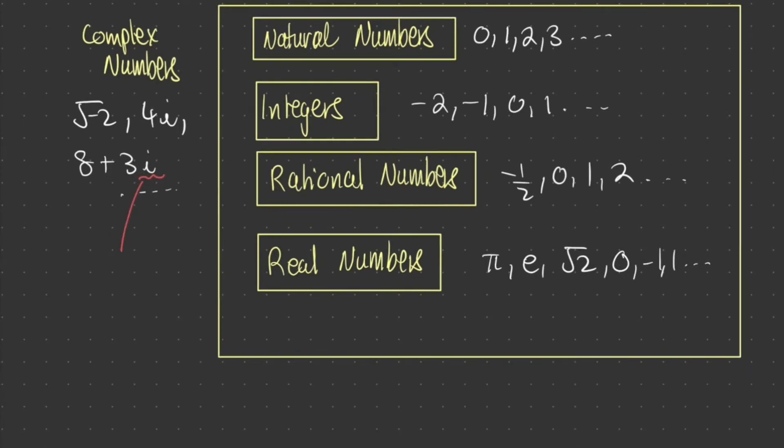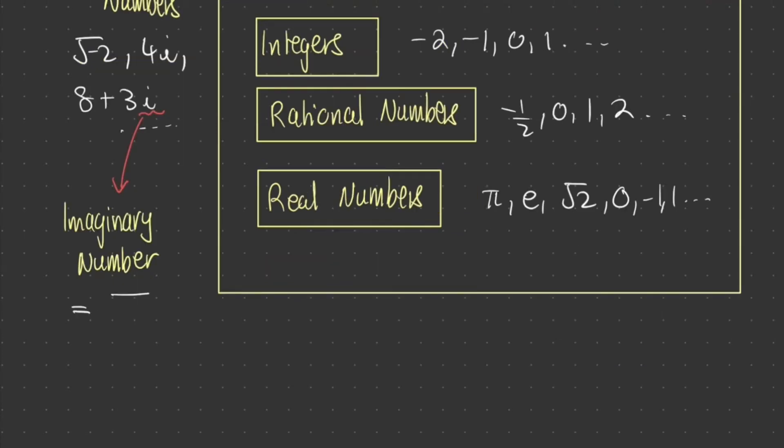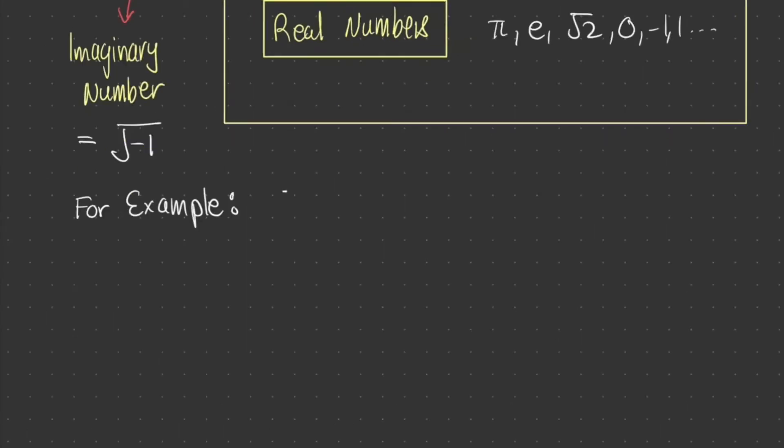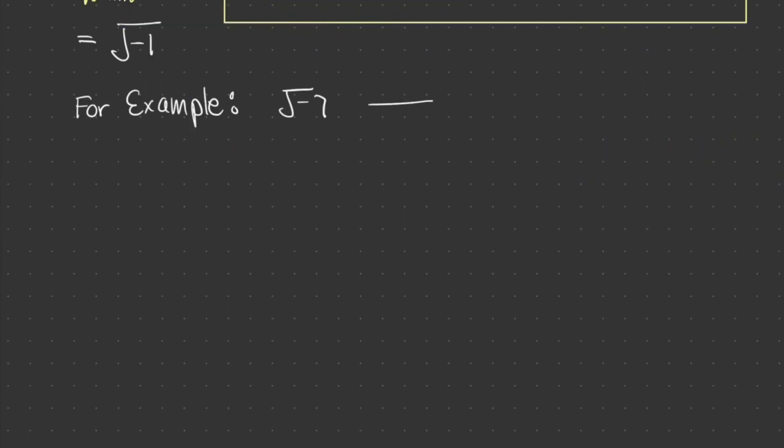Now, your i here is your imaginary number. And it's equal to the square root of negative one. Let's look at a quick example. Try solving the square root of negative seven. You'll quickly realize that that's not possible. But in fact, it is possible if we use complex numbers. And it's equal to the square root of 7i.